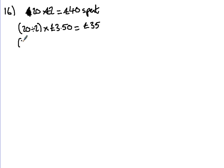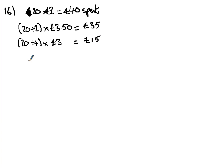Then we've got a quarter, so that's 20 divided by 4, and he sells them at £3.00. So a quarter of 20 is 5, and 5 times 3 is £15. Then he sells the rest of the books. So if that's 10 and 5, we're left with 5 books, and he sells the rest of them for £2.00 each.